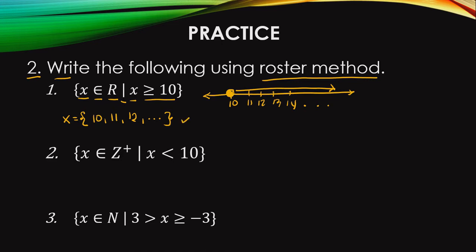The second one is: a set of x is an element of positive integers such that x is less than 10. Let's draw a number line — starting at 10. Since it's less than, we go to the left: 10, 9, 8, 7, 6, 5, and so on and so forth.